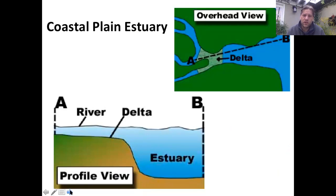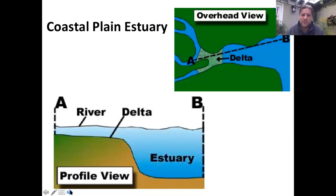The first example is the coastal plain estuary. A river is going to come into contact with the ocean. If you think back, the last ice age was about 15,000 to 20,000 years ago, and at that time most of the freshwater on our planet was locked up in these massive glaciers. As these glaciers melted, sea level went up. You can imagine if the water level was down, over time the water began to move up, going into these river valleys, and ultimately that is going to form the coastal plain estuary.